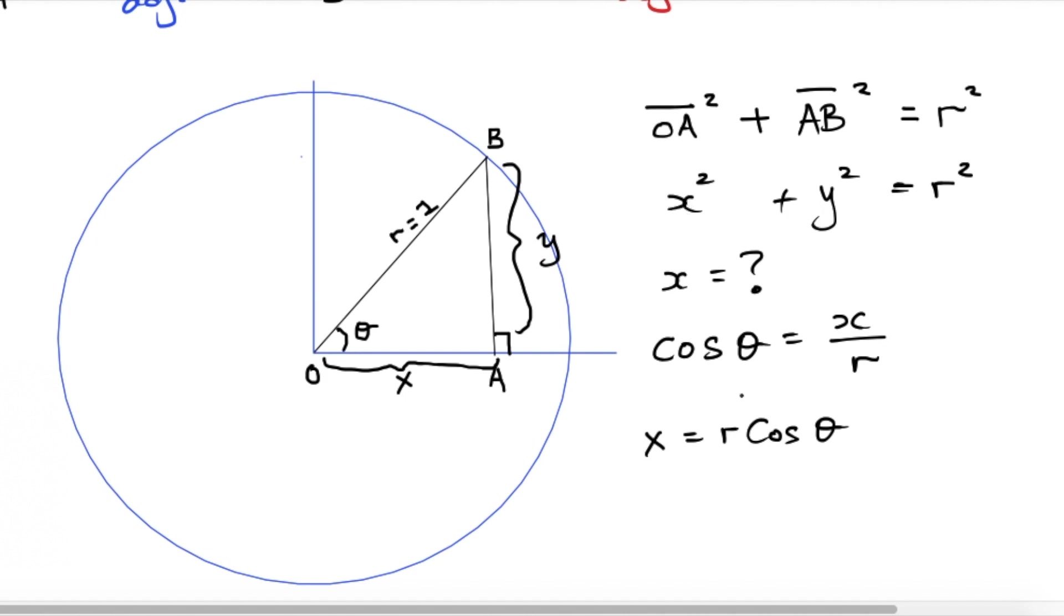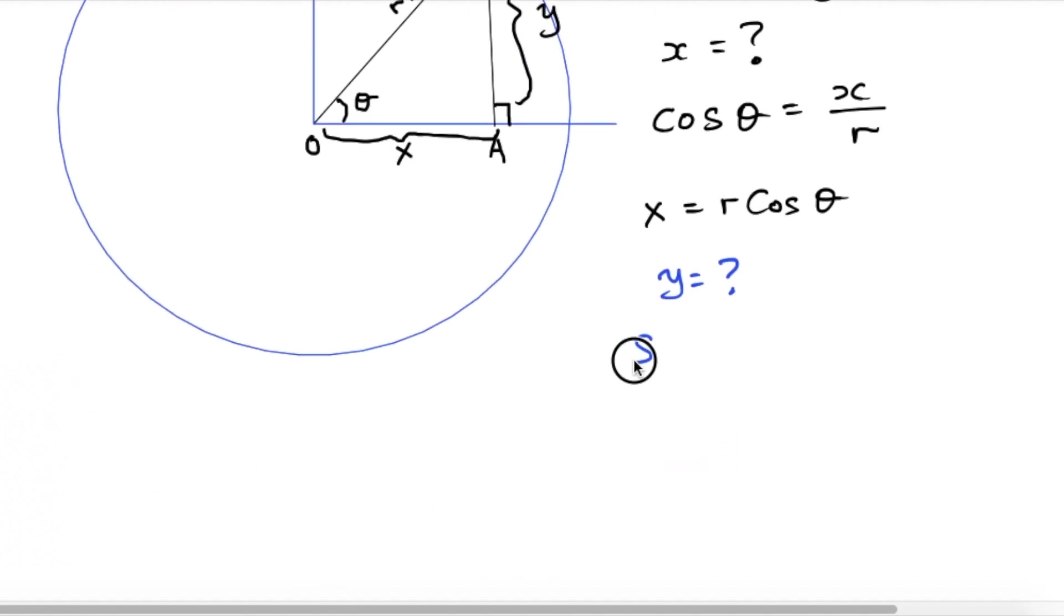If I were to substitute this into here, and I find out what is Y. My Y length is actually sine theta. It's actually Y over hypotenuse. So therefore my Y is actually R sine theta. So if I know what is X, I know what is Y.